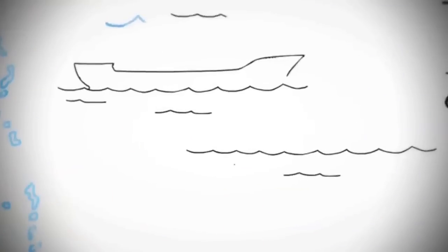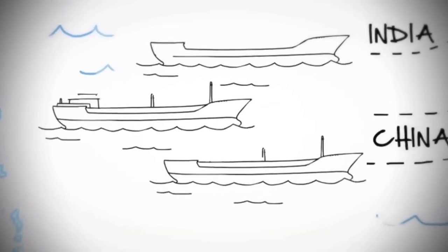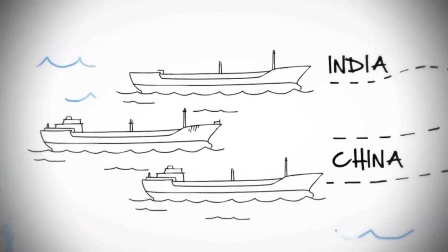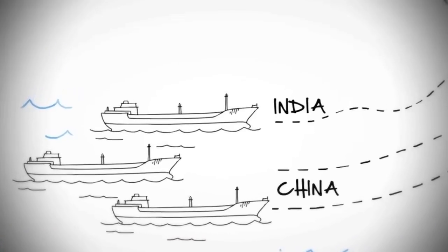And the thing is, the majority of materials being extracted from Australian soil will be shipped off to China and India, along with the profits. All that pollution makes global climate change worse, which is, you guessed it, another blow to our already fragile reef.